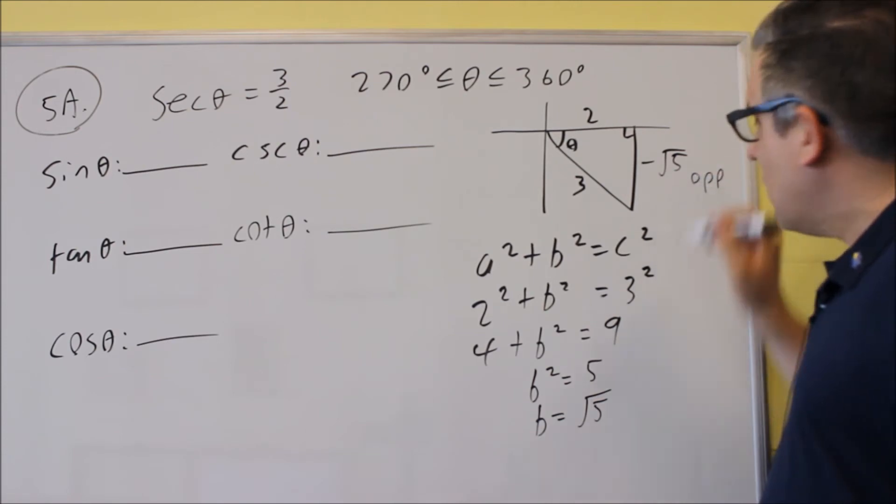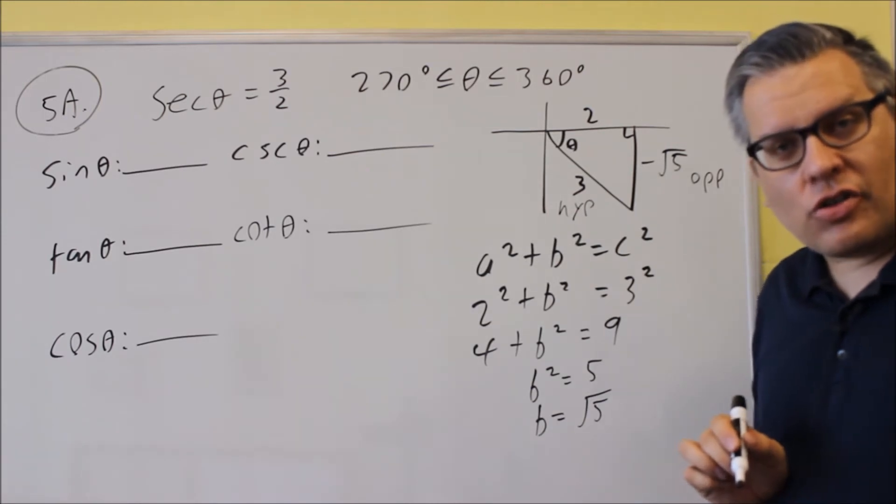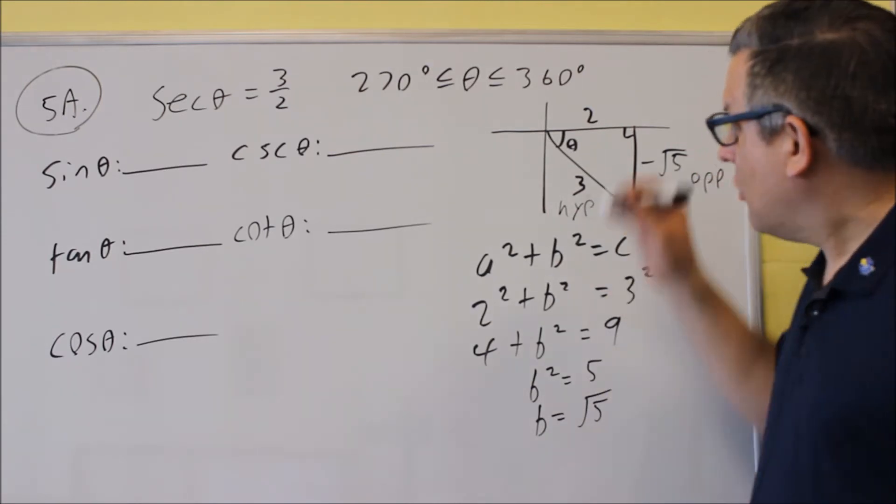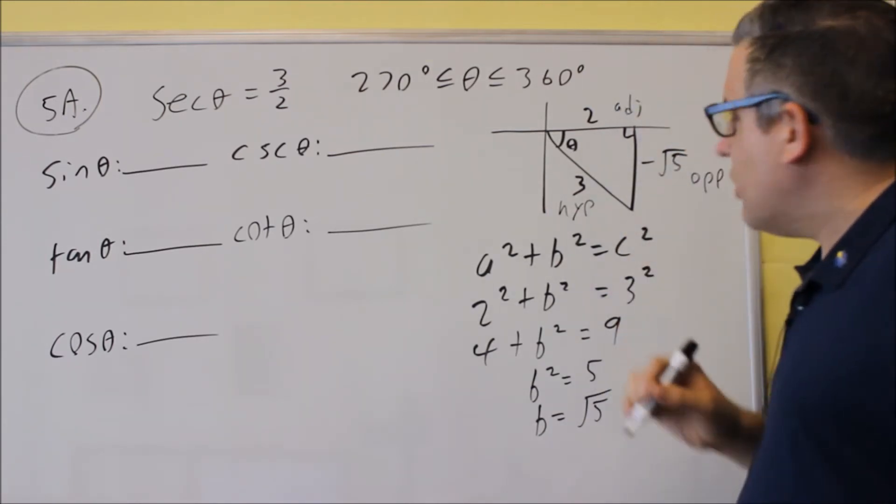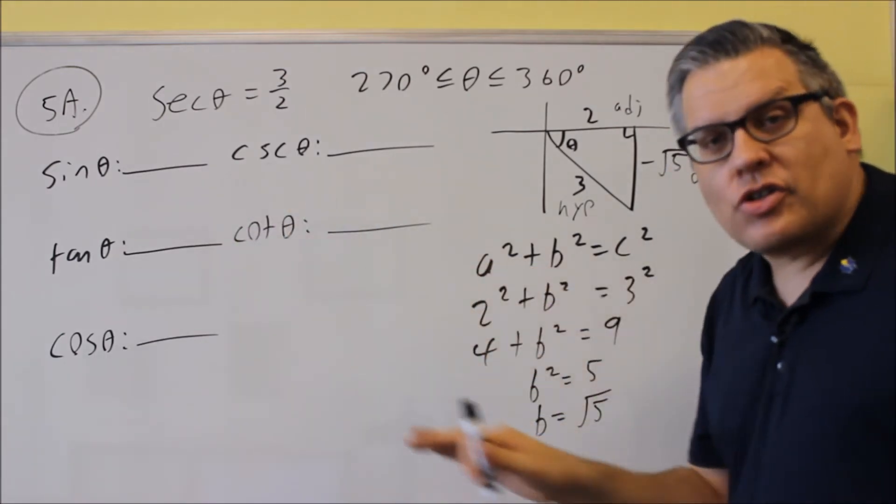We already said the three should be the hypotenuse because it's the longest side opposite the right angle. And the two needs to be the adjacent side. So now that we have this complete, we can fill out all these based on the definitions.